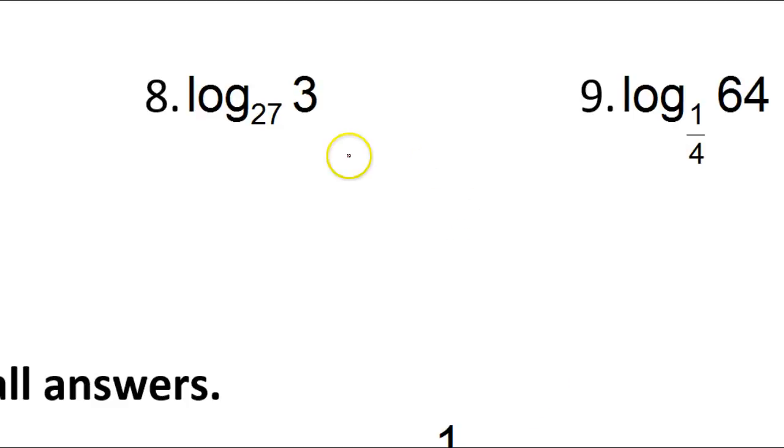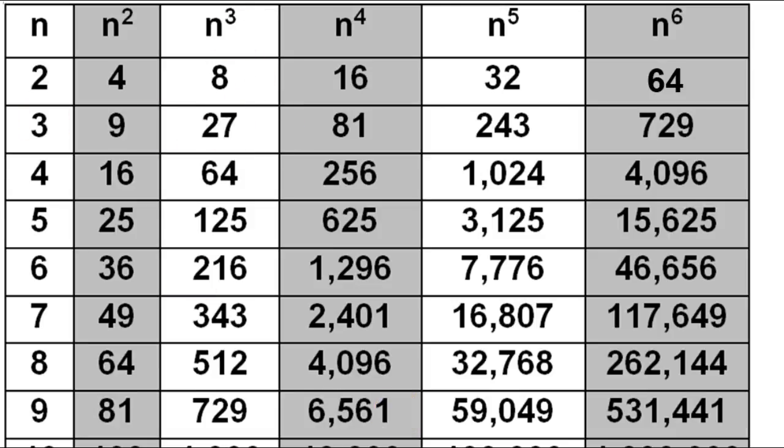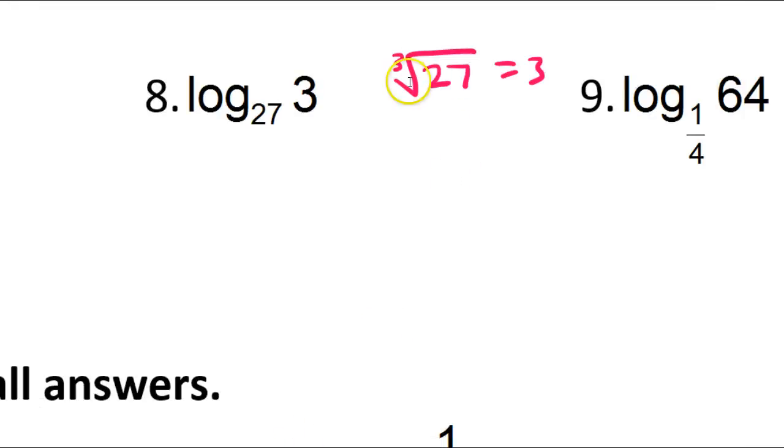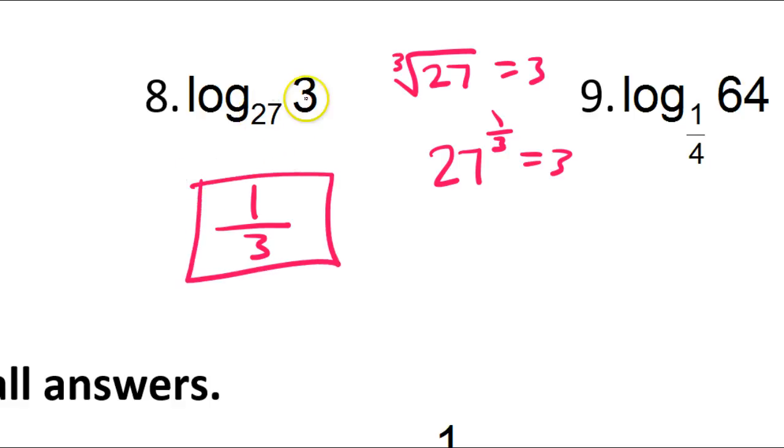And number 8. I think I did this one earlier. I have a big number becoming a smaller number. That means I must be doing the root. Is it the square root? No. Is it the cube root? Yes. The cube root of 27 is 3. So if the cube root changes 27 into a 3, cube root is the same thing as the one-third power. So 27 to the one-third power will equal 3. So this is the answer to the question. What power changes 27 into a 3? The one-third power. Because that's the same as doing the cube root.